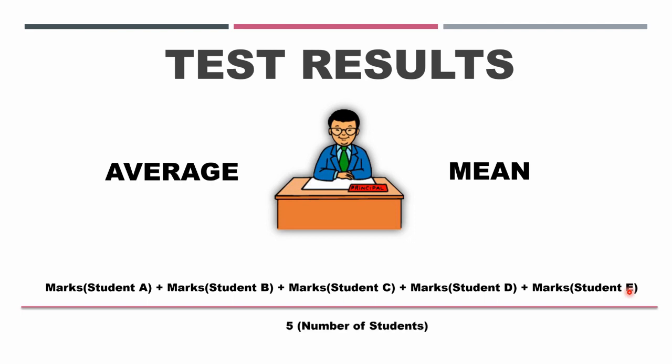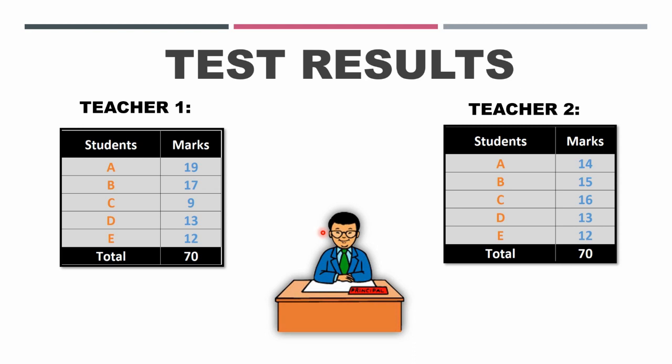Then he'll see whose mean or average is more and he'll hire that respective teacher. Now it's test time, so teacher 1 has the following result for the five students that she has taught, and teacher 2 is having the following results for the students that she taught.